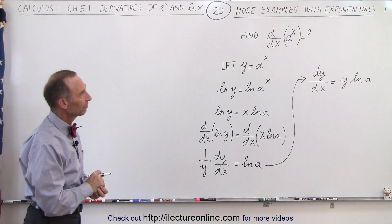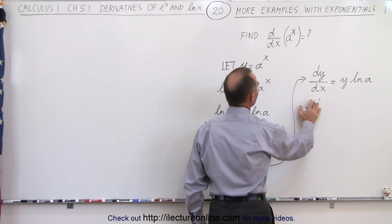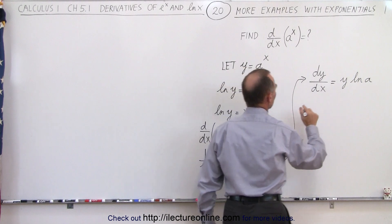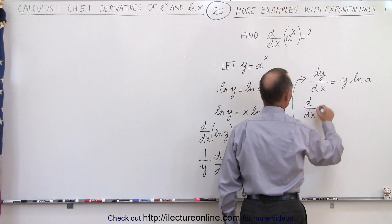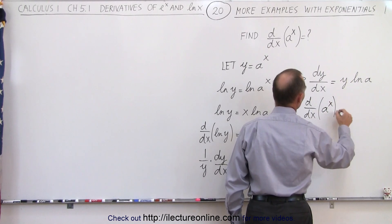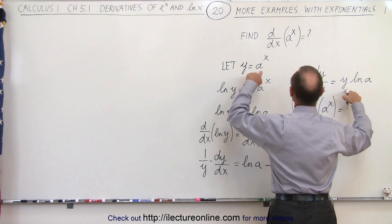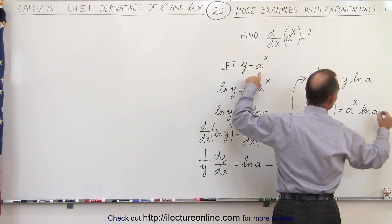So the derivative — since dy/dx is the derivative of y, which equals the derivative of a to the x — we can now say that the d/dx of a to the x is equal to y. But y is equal to a to the x, so we can write that as a to the x times the natural log of a.